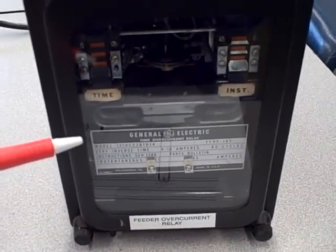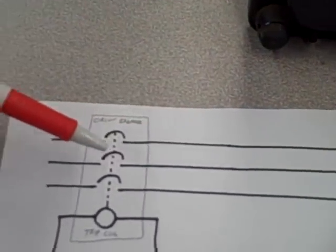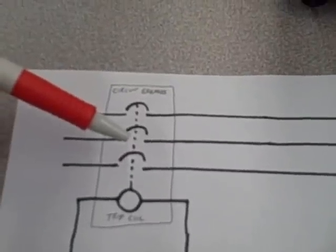In this case, we refer to these devices as protective relays. The job of the protective relay is to sense dangerous conditions in the power system and then to command the circuit breaker to trip to keep things safe.